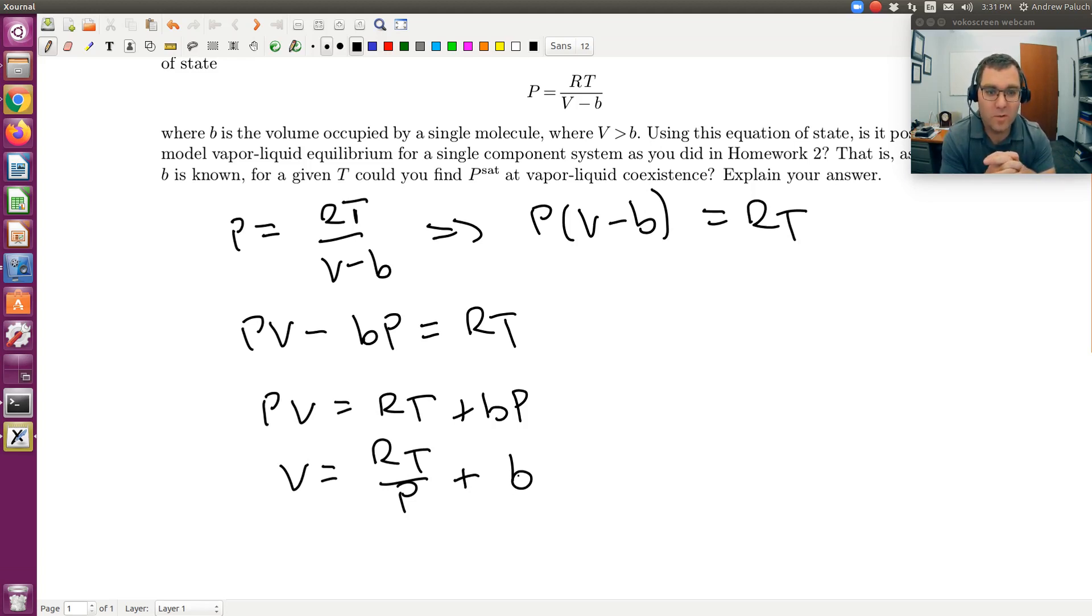So no, this equation of state isn't going to be capable of modeling vapor-liquid coexistence. Issue being is that when I solve for V, I see that for given temperature and pressure, I can only get a single unique V value. So I can't simultaneously model liquid and vapor phases. So that's issue one. Issue two, then, was just conceptually liquid phases or condensed phases result from strong intermolecular interactions. So this equation is not capable of modeling vapor-liquid coexistence. What I'm missing are intermolecular interactions in order to be able to capture such behavior. All right, there you have it.